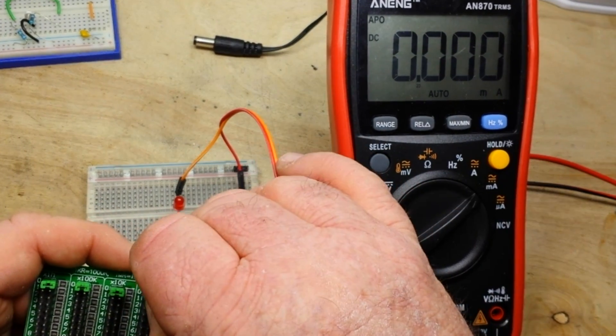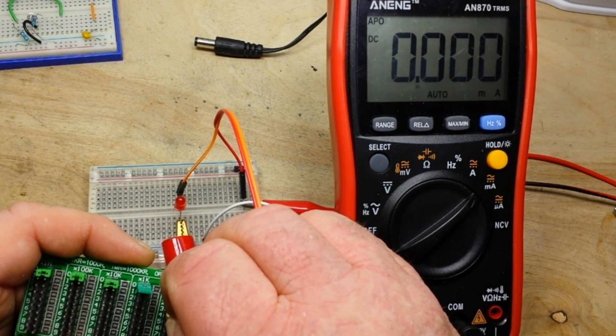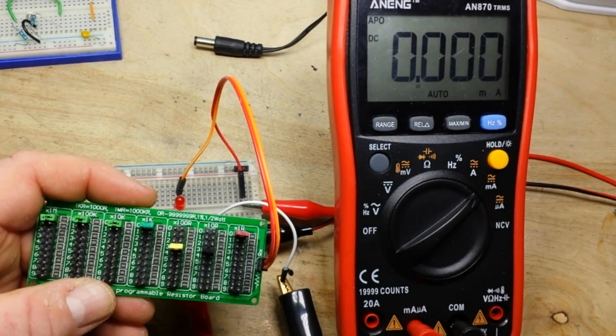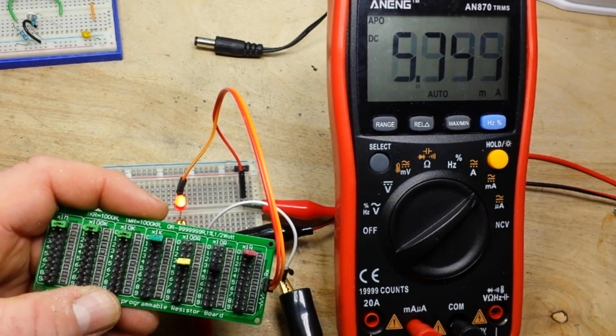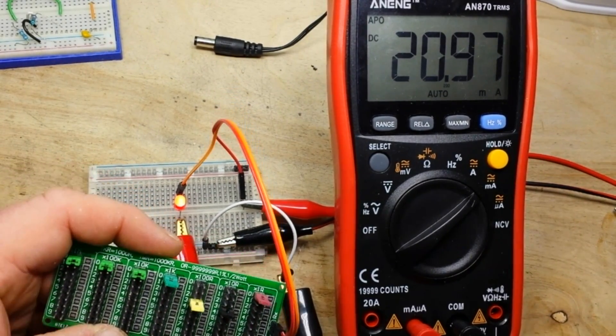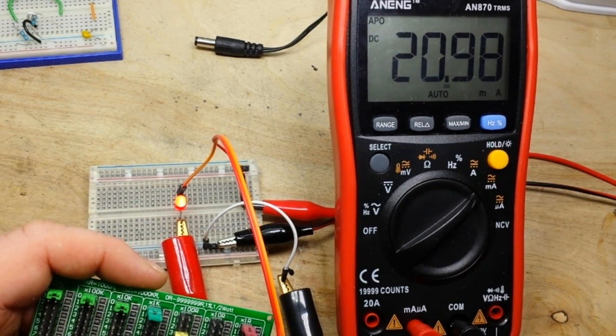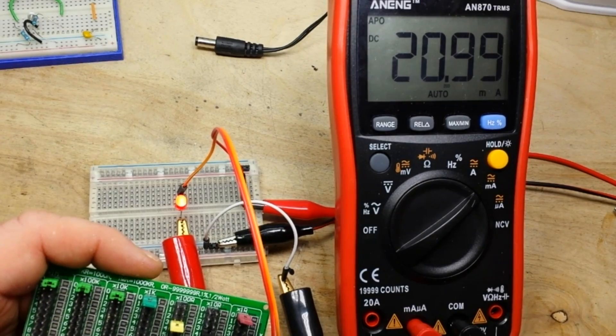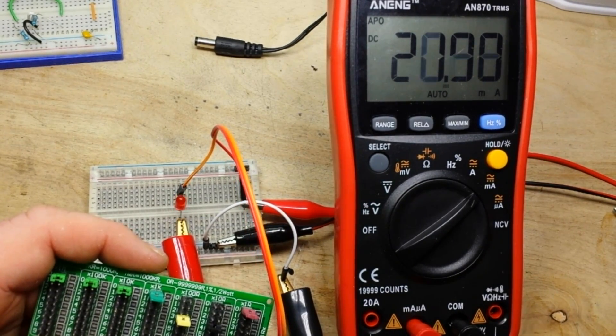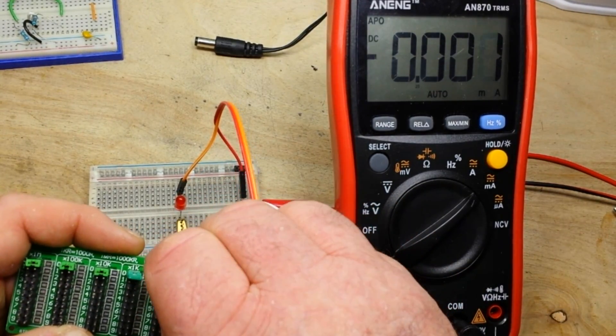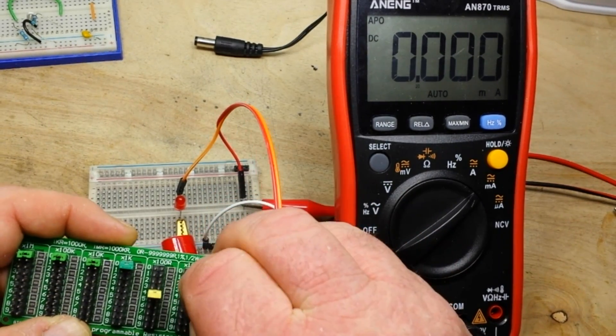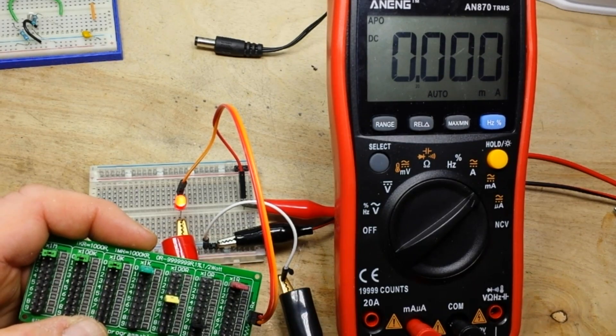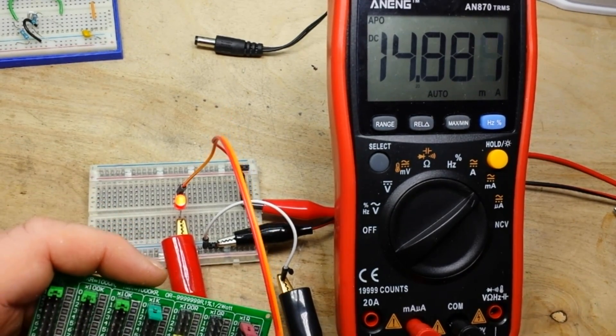Now, let's knock it down. Let's say 330 ohms. Now, that's right about where they want you to be at 20. Now, it's just annoyingly bright. Which is fine for some applications. But you're really going to run out. Now, in this case, 9 volts, I'd probably go 470. Yeah, see that puts you at 14. That's good.